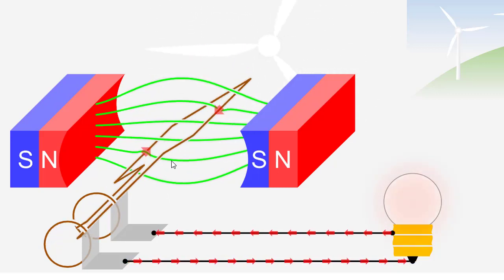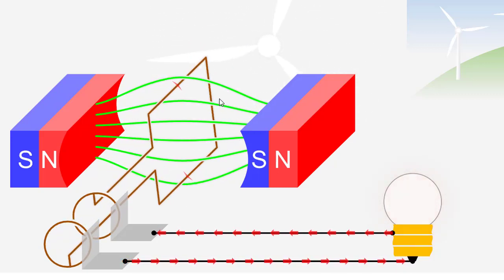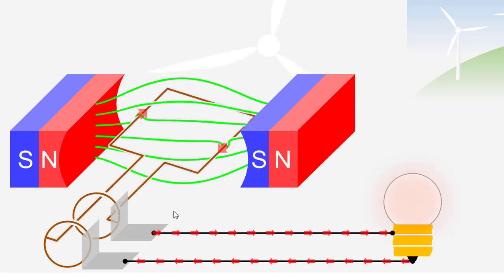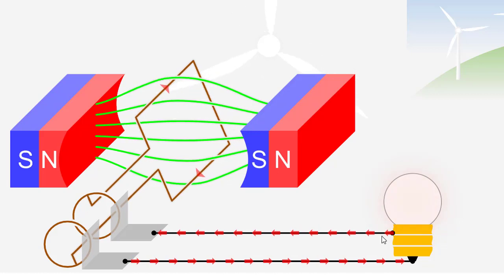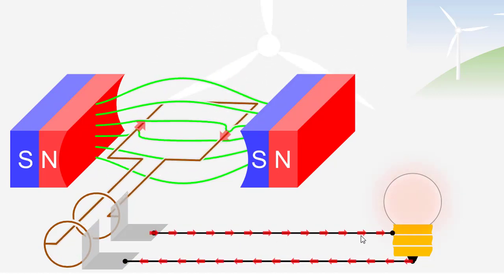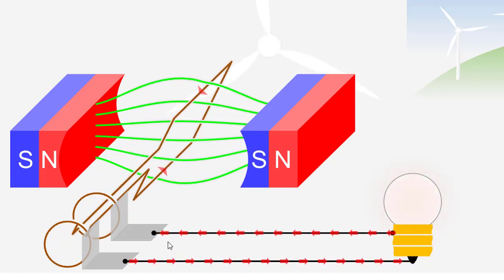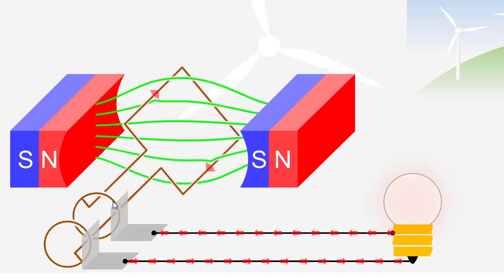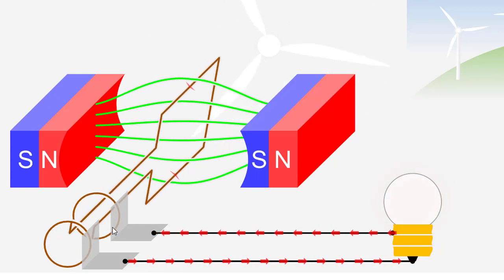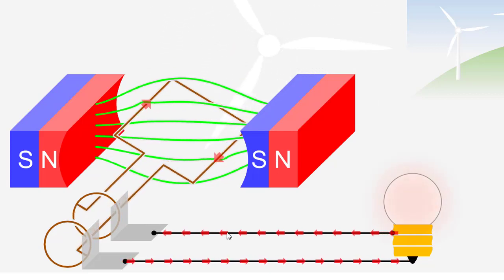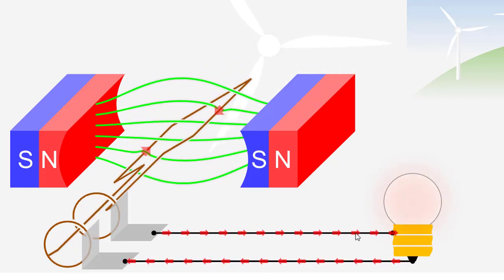It is rotating on its own axis. Here we can see the flow of current in alternating direction. This current is due to the induced EMF or the alternating voltage. Due to the alternating voltage, the alternating current is produced.